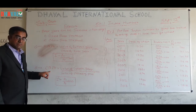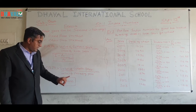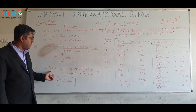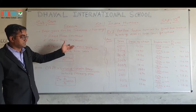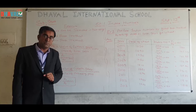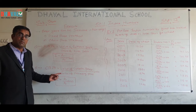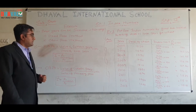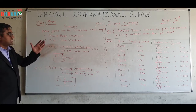Formula number two, Chain Base Method (CBM): value of current year divided by value of preceding year. Be careful — preceding year is for CBM, and base year is for FBM. That is the major difference between these two formulas. The rest is the same: into 100. So the formula is I = P1 / P0 × 100. Keep these two formulas in mind for all types of sums.